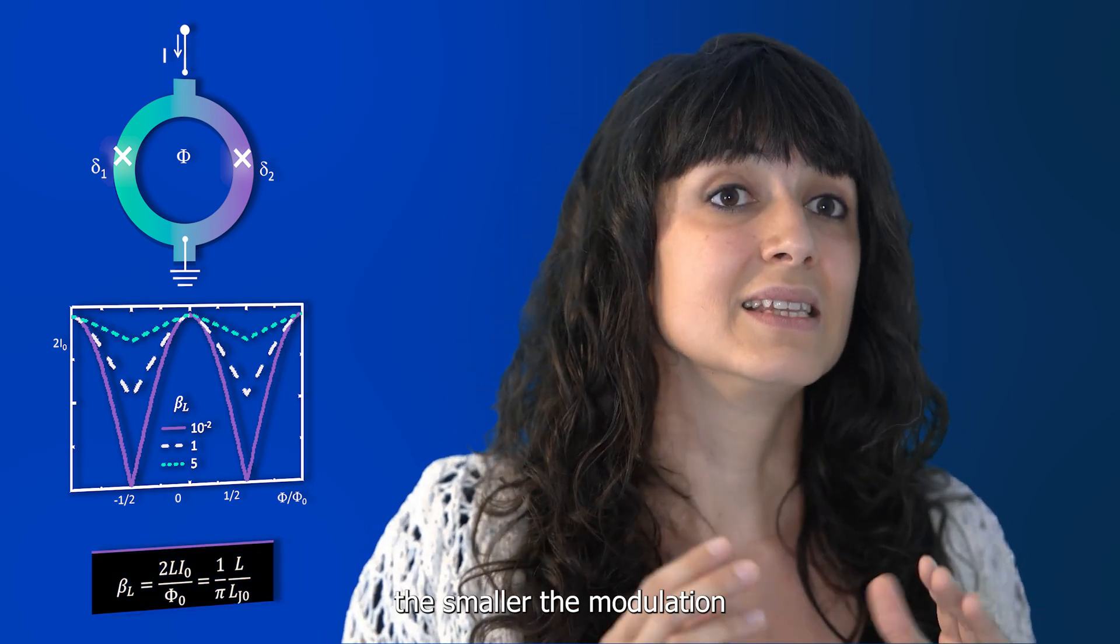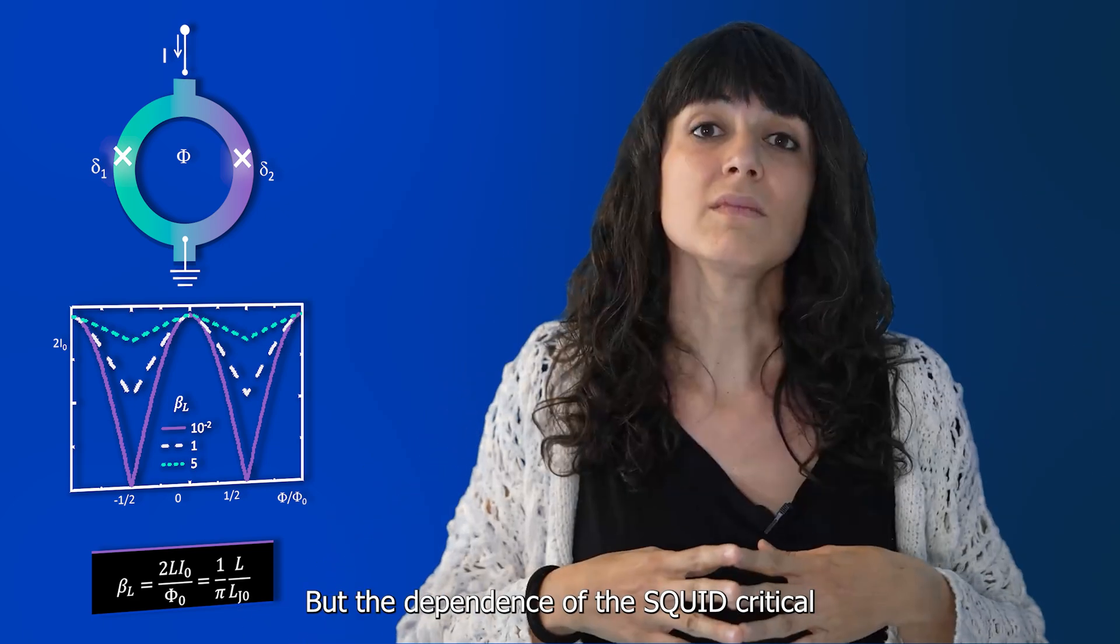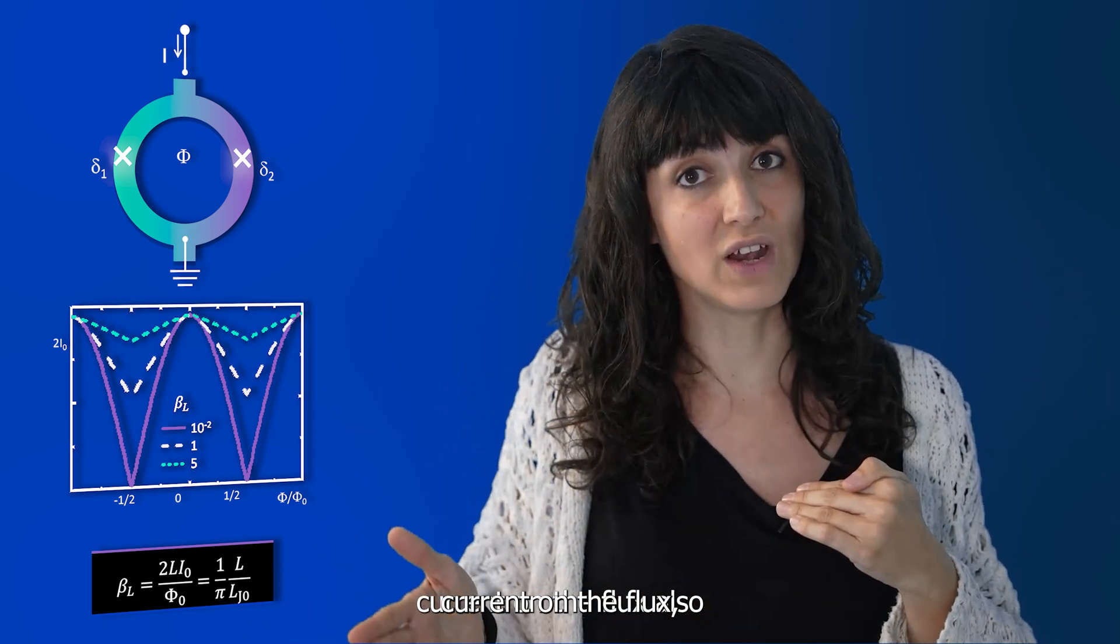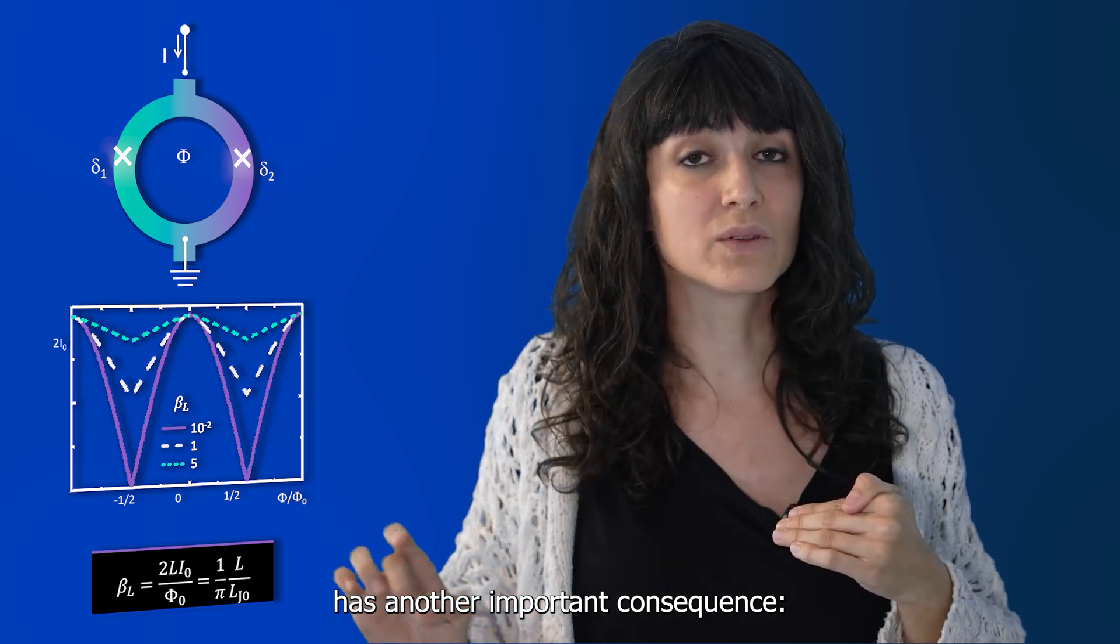These effects are quantified by the screening parameter beta-L. The larger beta-L, the smaller the modulation. But the dependence of the SQUID critical current on the flux has another important consequence.